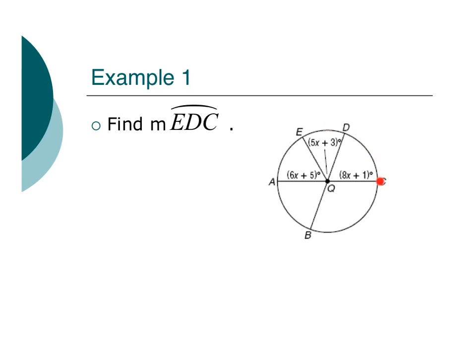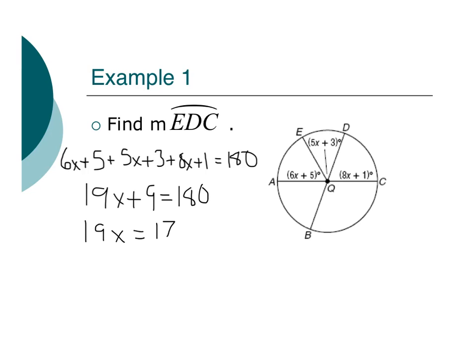I realize that this right here is a semicircle. So, half the circle, that's 180 degrees. If I add everything up and set it equal to 180 and solve for x, I can be on my way to arc EDC. Now, I just need to combine my like terms and finish solving for x. So I have 19x equals 171. Divide by 19, I get x equals 9.